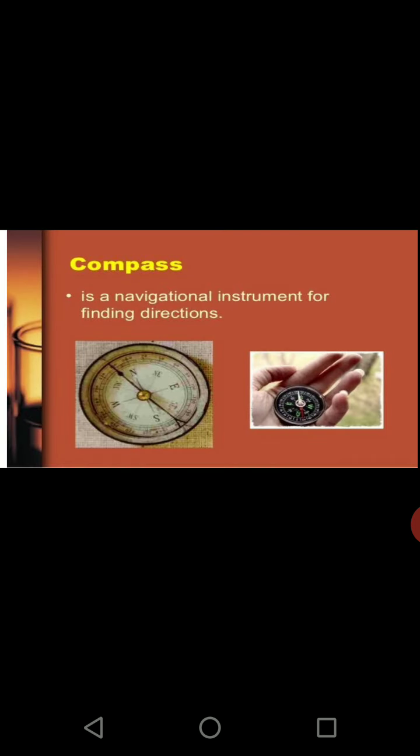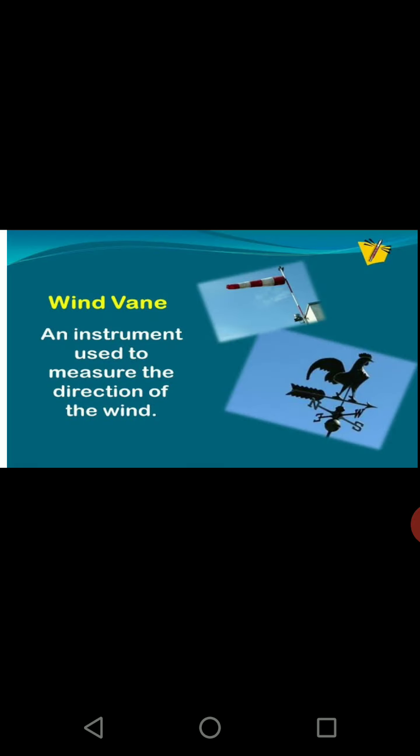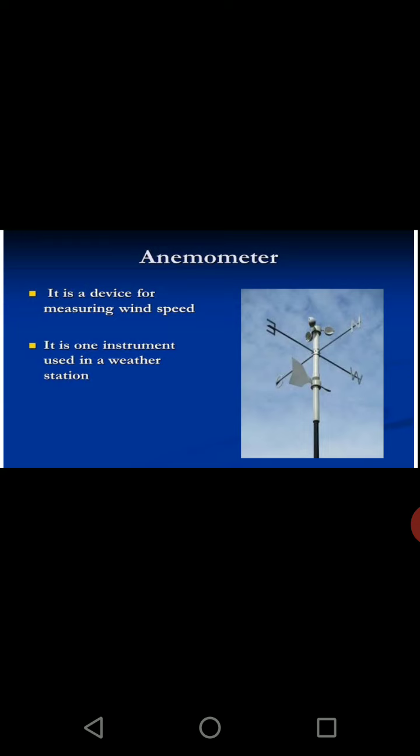Compass — you are all aware of this — it is for knowing directions. Wind vane is generally used to detect wind direction. And finally, the anemometer — it is the device which measures wind speed. How fast this instrument spins determines the wind speed. All these are the various weather instruments which measure the weather elements.